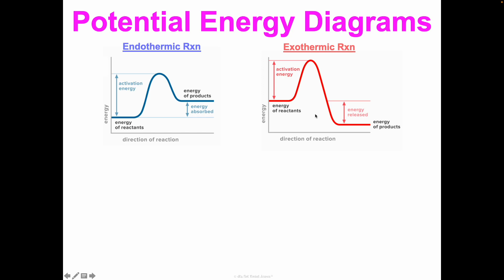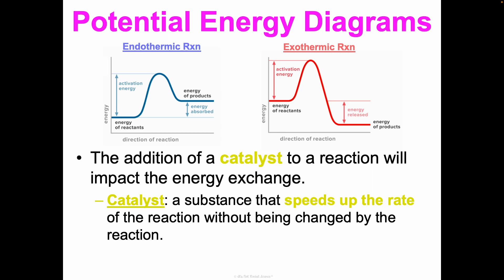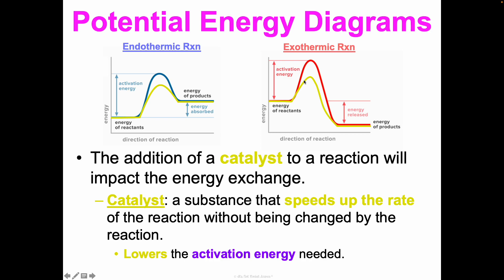Something that can change the look of potential energy diagrams is a catalyst. A catalyst is a substance that speeds up the rate of the reaction without being changed by the reaction — it's not a reactant or a product. It changes the reaction by lowering the activation energy. On the diagram, the catalyzed pathway shown in yellow starts and ends at the same energy levels, but requires less energy to get the reaction going. A catalyst lowers the amount of energy needed to break those initial bonds.